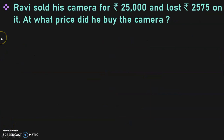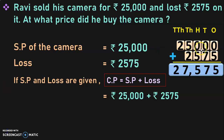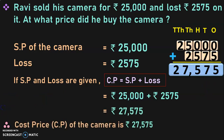Ravi sold his camera for rupees 25,000 and lost rupees 2,575 on it. At what price did he buy the camera? Selling price and loss are given, so cost price equals selling price plus loss: 25,000 plus 2,575 equals 27,575. The cost price of the camera is rupees 27,575.